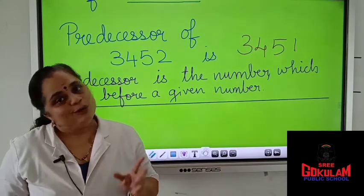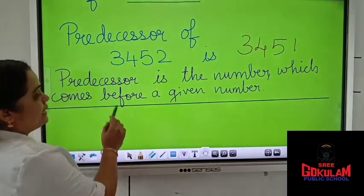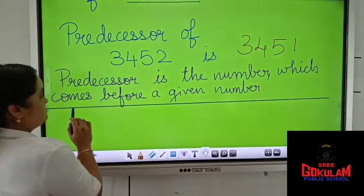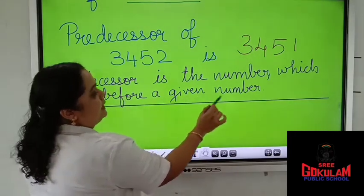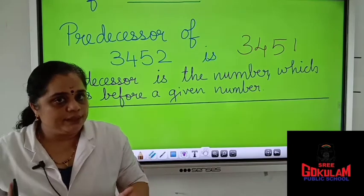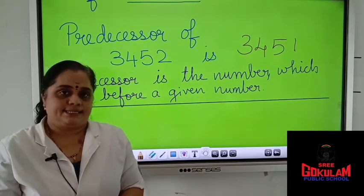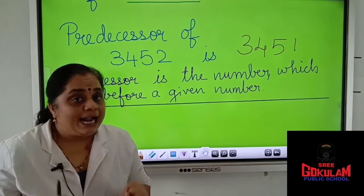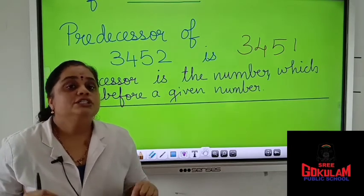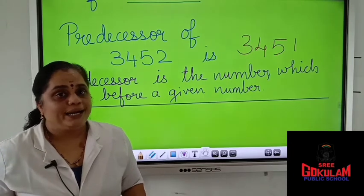Predecessor is the number which comes before a given number. A number is given; before that, which number should come — that is called the predecessor. The predecessor of 100 is 99. Predecessor of 211 is 210.